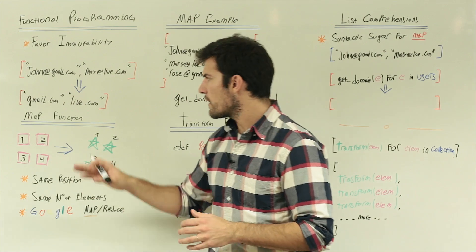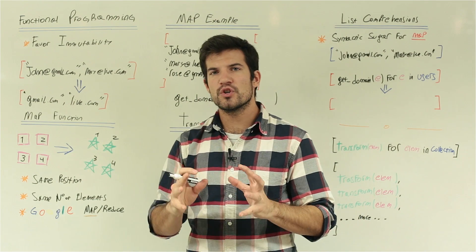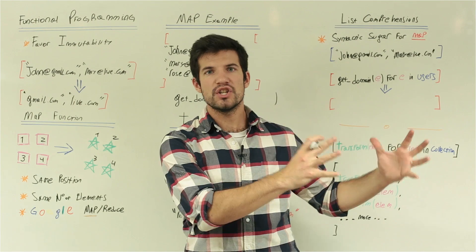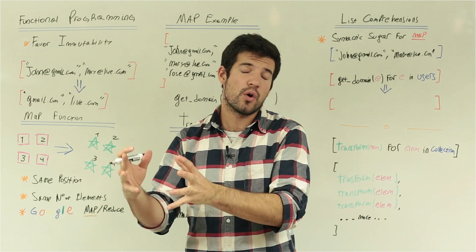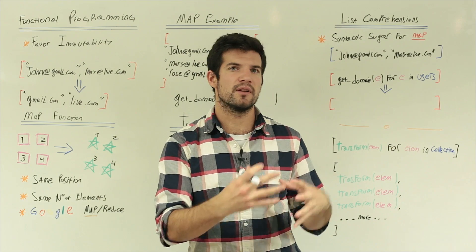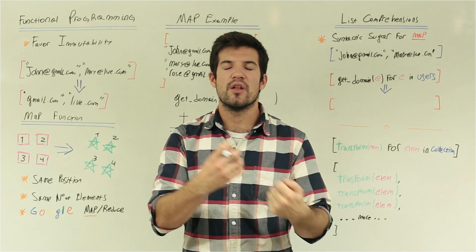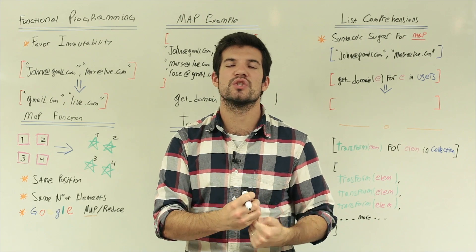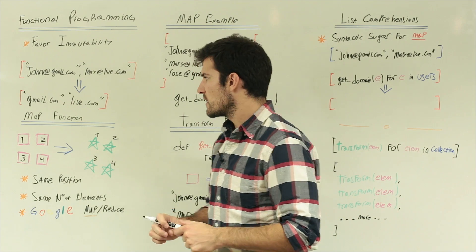The second concept is about the map function. The map function is about applying a transformation to our original collection to get a new collection out with all those elements transformed. For example, you have a list of numbers and you want to get all these numbers squared — you're applying a transformation to each one of the original elements.